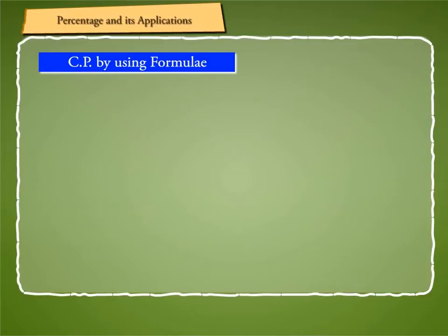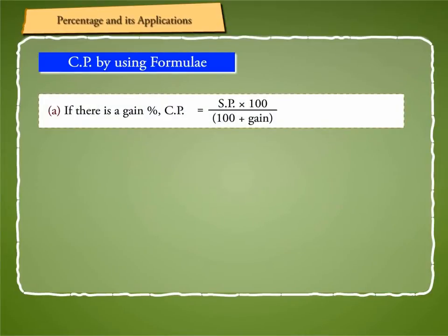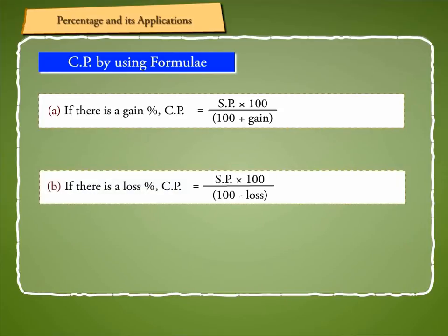One can also find the cost price directly by using the following formulae. If there is a gain percent, CP is equal to SP into 100 by (100 plus gain). If there is a loss percent, CP is equal to SP into 100 by (100 minus loss).